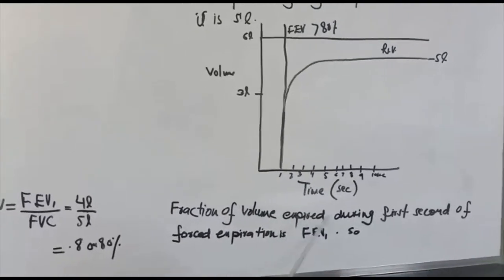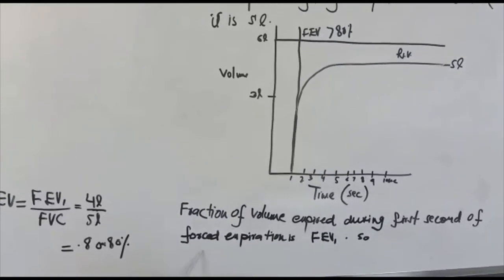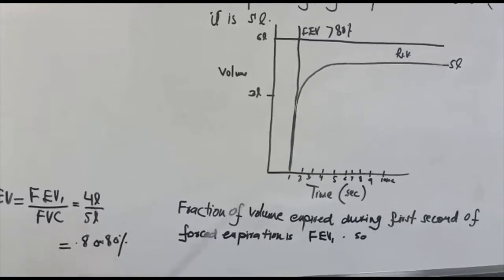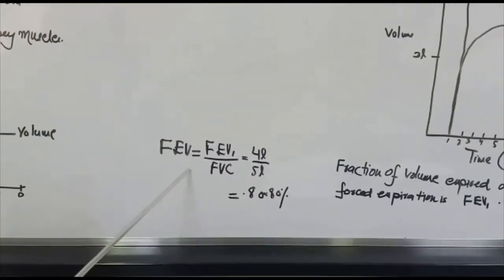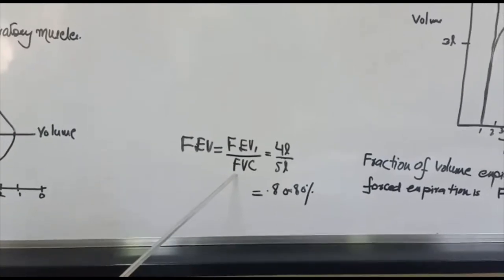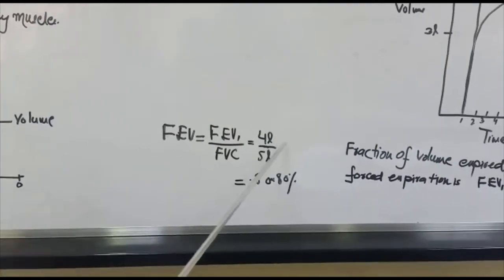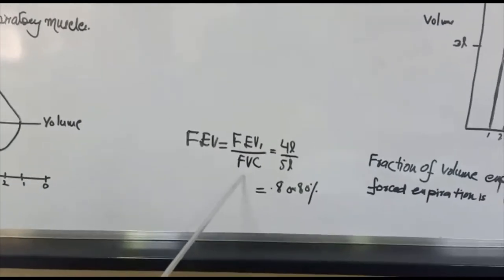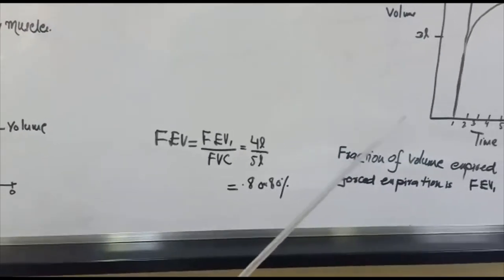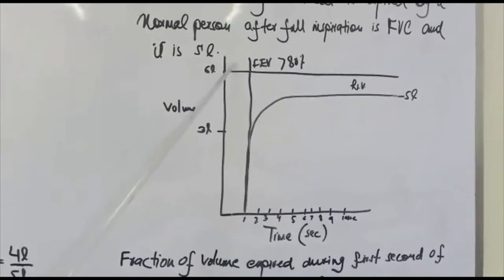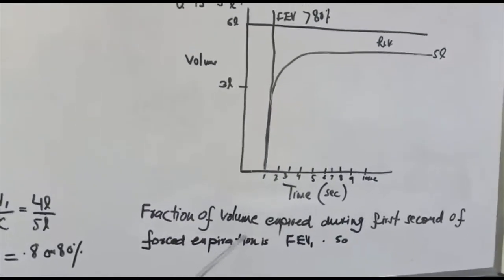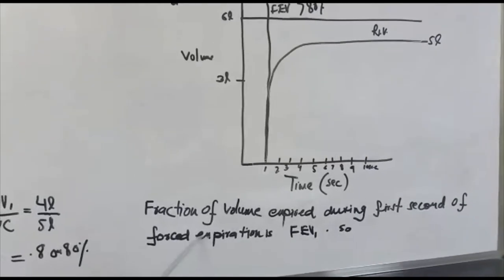The fraction of the volume expired during the first second of forced expiration is forced expiratory volume 1 (FEV1). Forced expiratory volume ratio equals FEV1 divided by forced vital capacity. This equals 4 liters divided by 5 liters, which comes to about 0.8 or 80 percent. So forced expiratory volume is 0.8, or 80 percent, which by definition is the fraction of volume expired during the first second of forced expiration.